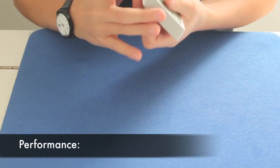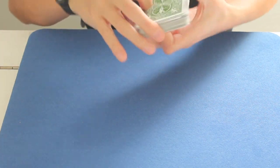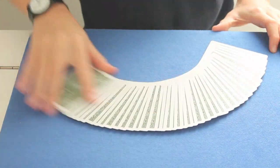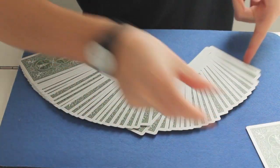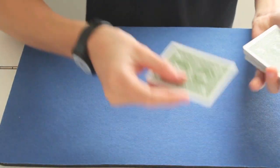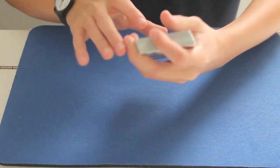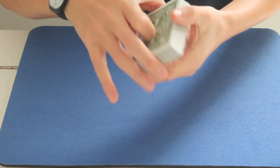First, the spectators shuffle the cards as much as they want. Then they pick one, let's say this one for example, take a look at it, that's great, and then I will simply lose it in the deck, like this.